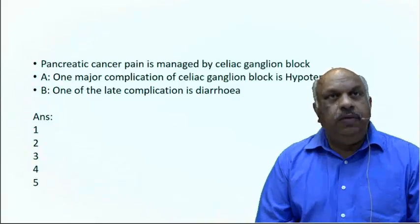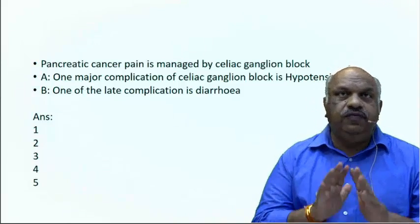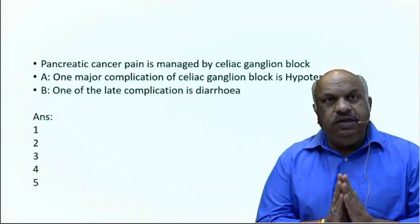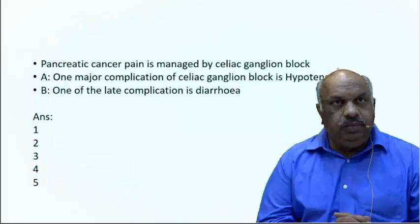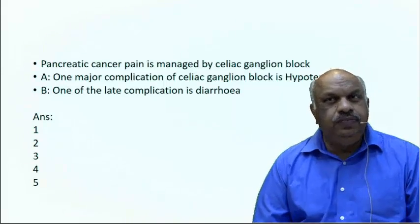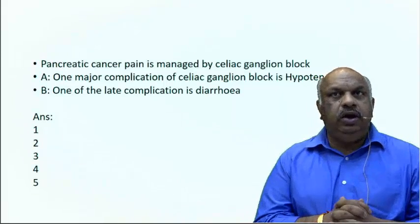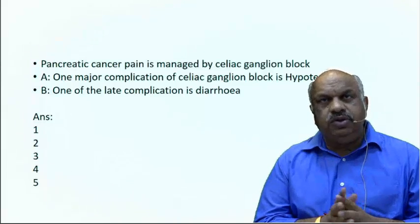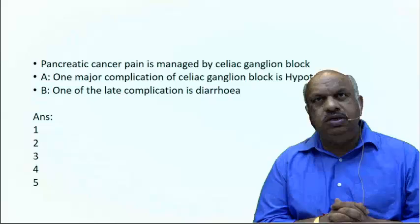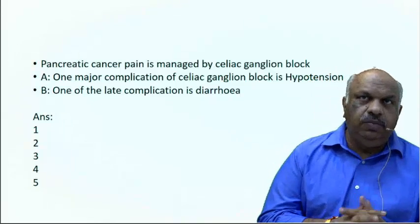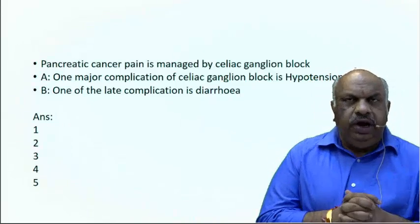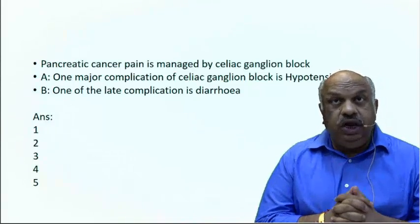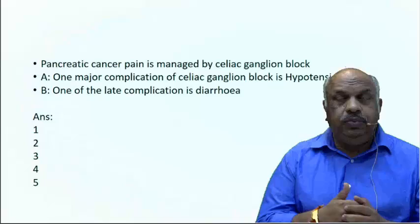The question is about pancreatic cancer pain. For palliation of pain in pancreatic cancer, either we keep the patient on morphine because NSAIDs don't work, or the best way is a celiac ganglion block or splanchnic nerve block. Celiac ganglion block is done by absolute alcohol; splanchnic nerve block is normally done by radiofrequency ablation, which is considered more precise and safer.